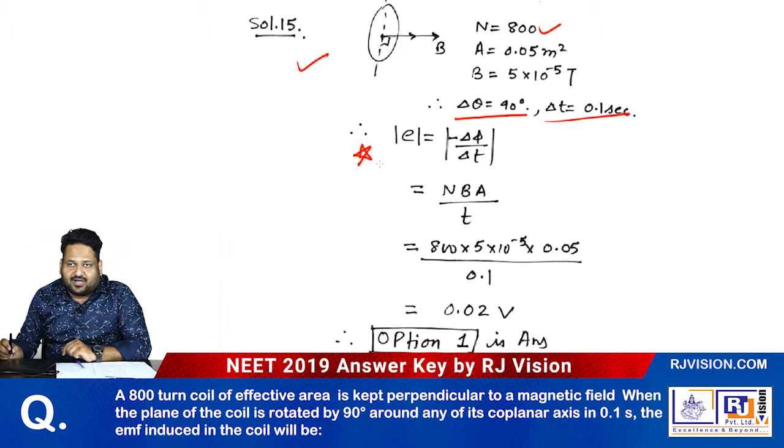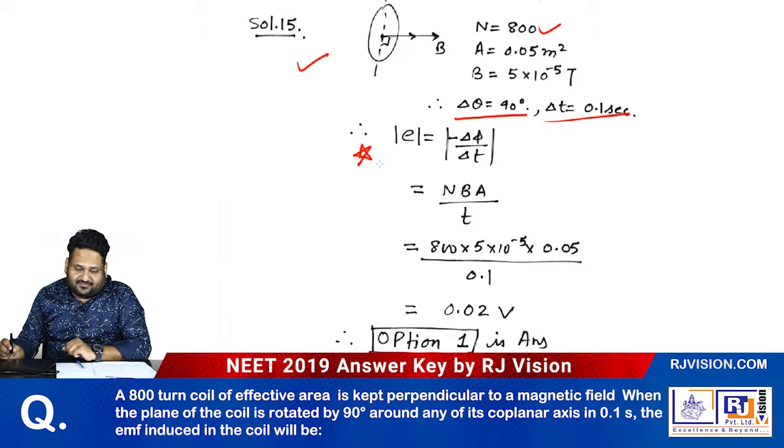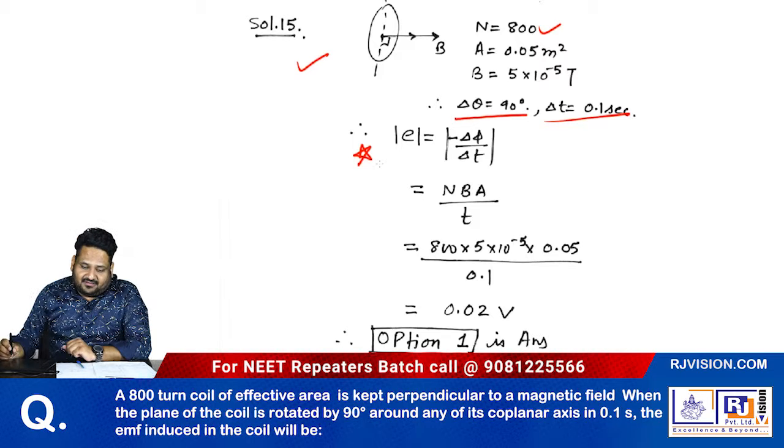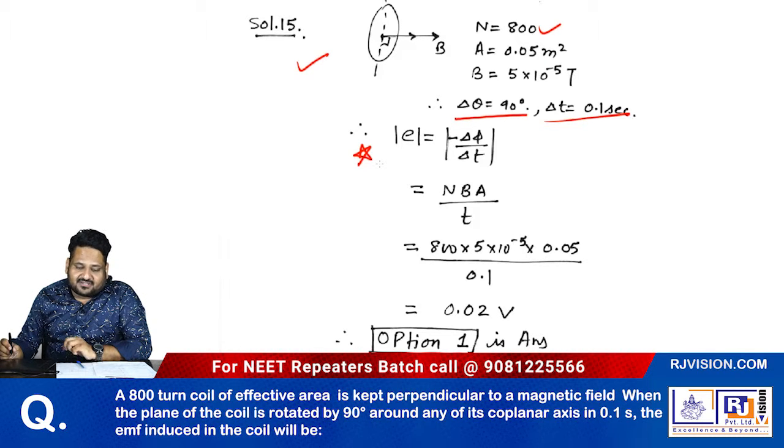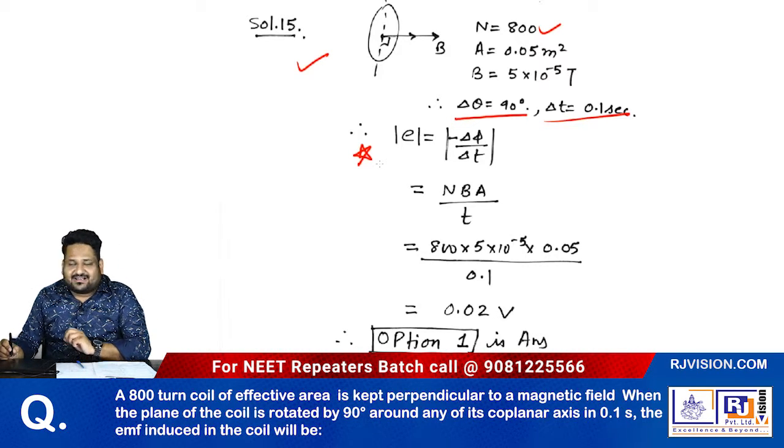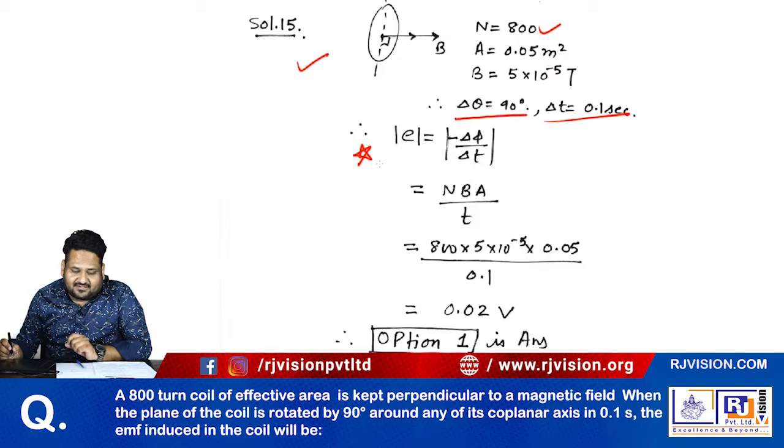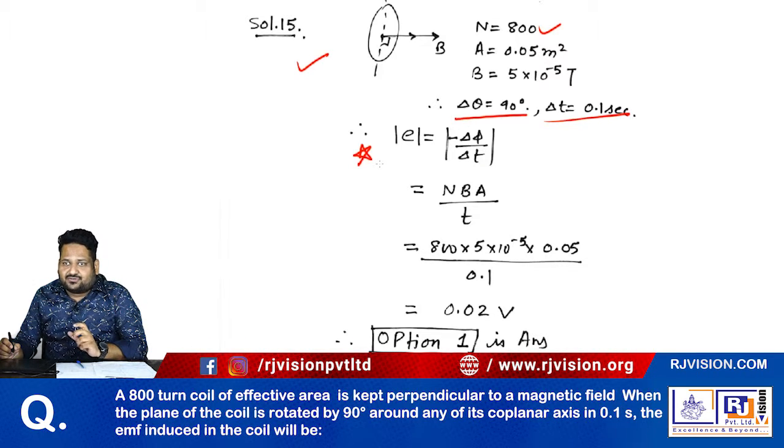Let's solve 2019 Code R2 Physics question number 15. Here the number of turns are given, the effective area is given, the magnetic field is given, and the angle by which it is rotated—90 degrees—that is also given, and the time in which it is rotated is also given.